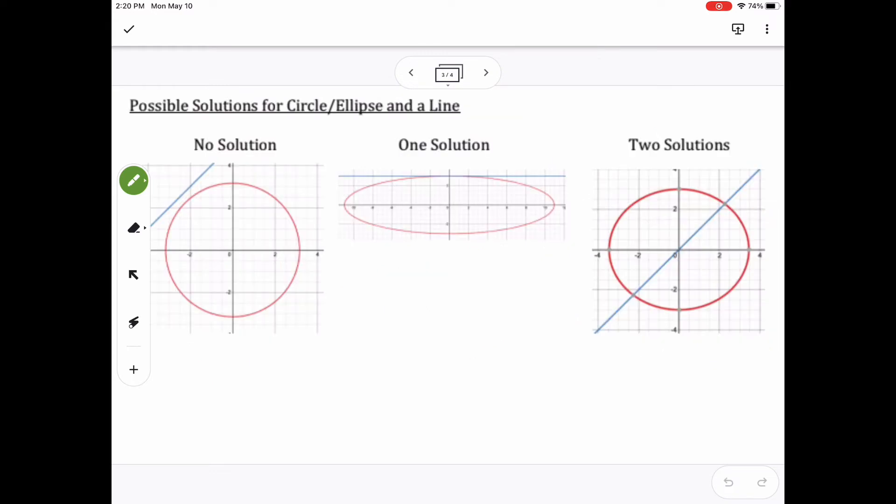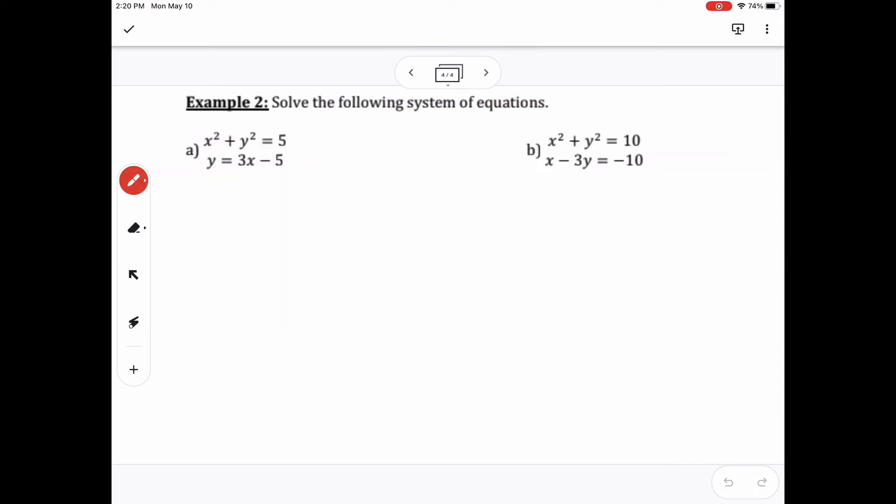Now sometimes you may have a line in a circle or ellipse. Sometimes these scenarios will be the same. So I could have no solution, one solution where the line is tangent to one side, or two solutions where it just goes through. Kind of the same possibilities as a parabola and a line.